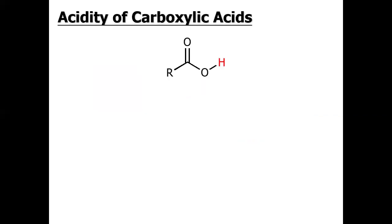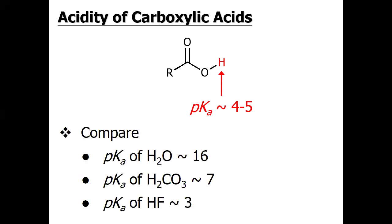If we look at the structure of carboxylic acid, this H is somehow very much acidic in nature, and its pKa or dissociation constant is actually in between 4 to 5. When we compare the acidity of this carboxylic acid with water, which is around 16, this carboxylic acid proton is much more acidic. When we compare with carbonic acid, which has a pKa of 7, or with HF, we can see it is less acidic than HF but more acidic than carbonic acid.